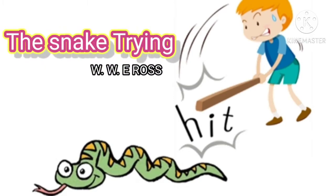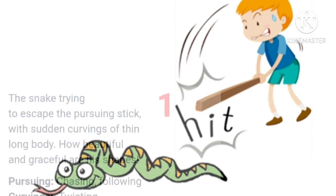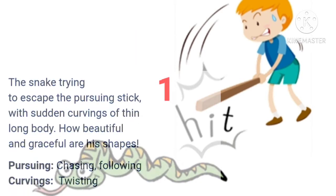The Snake Trying, written by W. W. E. Rose. Now let's read the poem and explain it in detail.